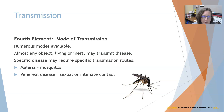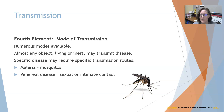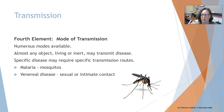The fourth element is transmission. There are numerous modes of transmission — almost any object, living or inert, could transmit a disease. A living object could be your hands — if your hands are contaminated and you shake someone's hands without sanitizing them, you could transmit a virus to another person. Similarly, if you touch a doorknob with contaminated hands, the next person who touches that doorknob could pick up whatever virus or bacteria was on your hands.